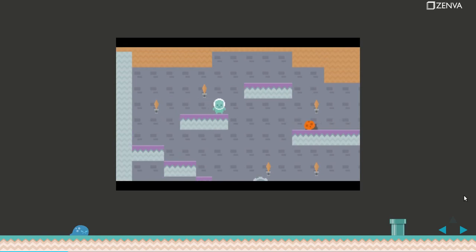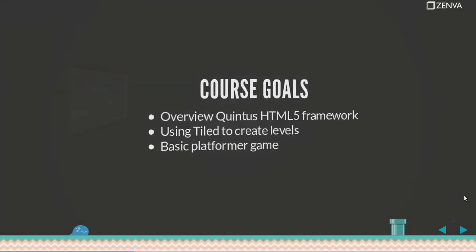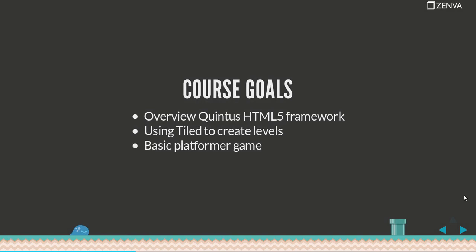What we'll be using to build this game is a JavaScript library called Quintus, which is a lightweight but very powerful game engine created by Pascal Rittich that allows you to create all sorts of two dimensional games with HTML5. The goal of this course is to get you up and running with Quintus. We'll also be using a free program called Tiled that allows you to create levels in a visual way.